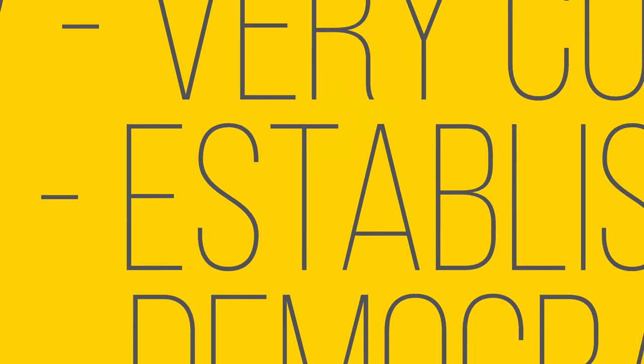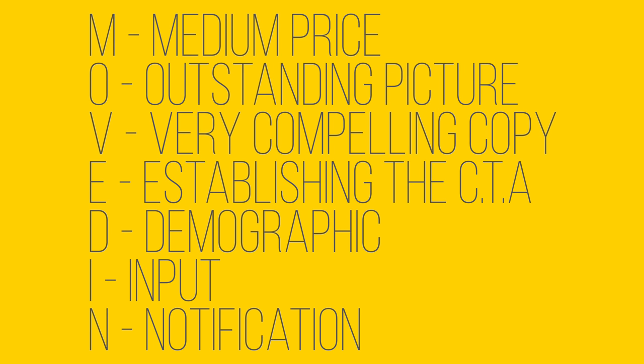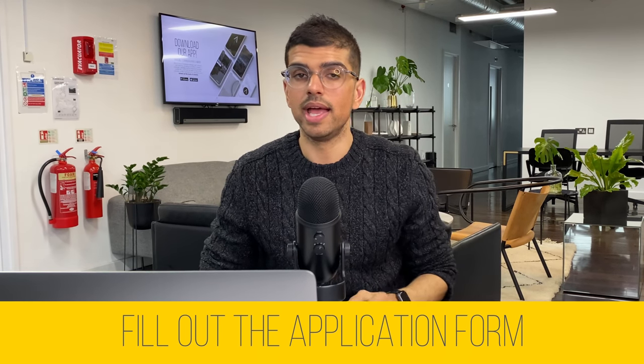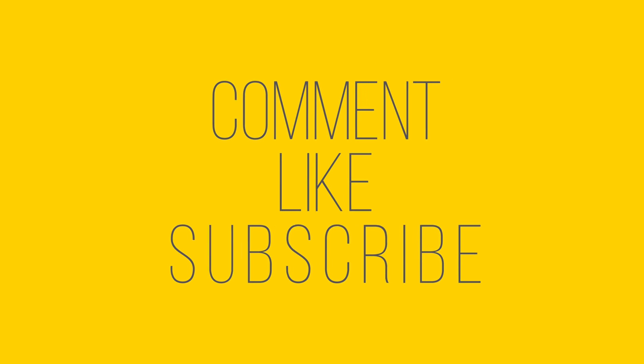That is the seven-step framework for Facebook advertising for realtors. Just to recap, it's called MOVED IN: M stands for Medium Price, O stands for Outstanding Pictures, V stands for Very Compelling Copy, E stands for Establishing the Call to Action, D stands for Demographic, I stands for Input, and N stands for Notifications. Hopefully you now have a lot more confidence running Facebook ad campaigns for your real estate business. If you want help setting this up or running your campaigns, feel free to fill out the application form in the description. Make sure you comment, like, and subscribe because it helps the channel out — I'll see you all in the next video. Peace.